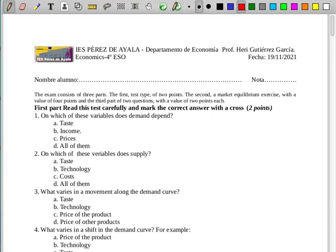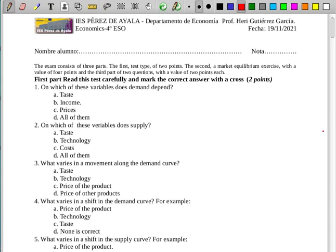If you remember, the exam consists in three parts: the first type test of two points, the second one a market equilibrium exercise with a value of four points, and the third part is a question with two points each one. First of all, in the test, the first question: on which of these variables does the demand depend? If you remember, demand depends on income, taste, price of the product and price of another product. For the question, all of them is the right answer.